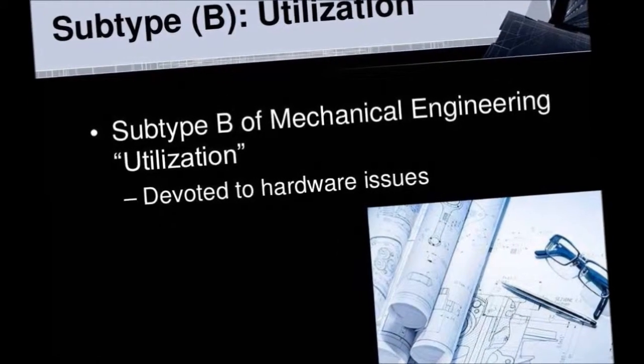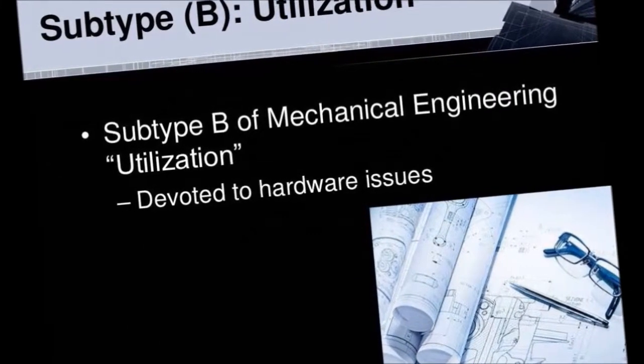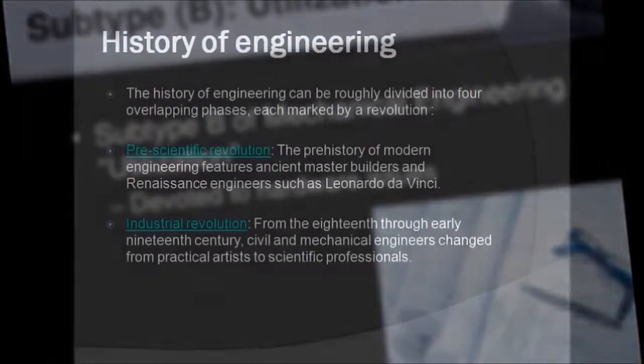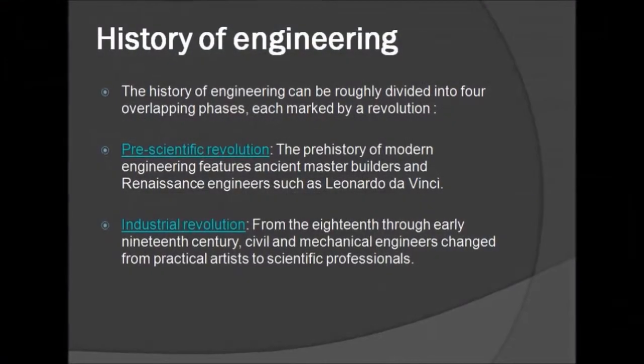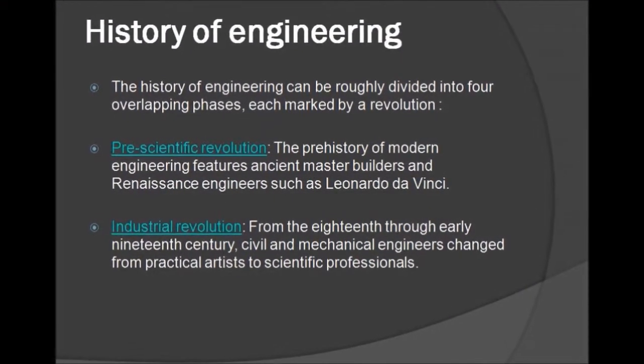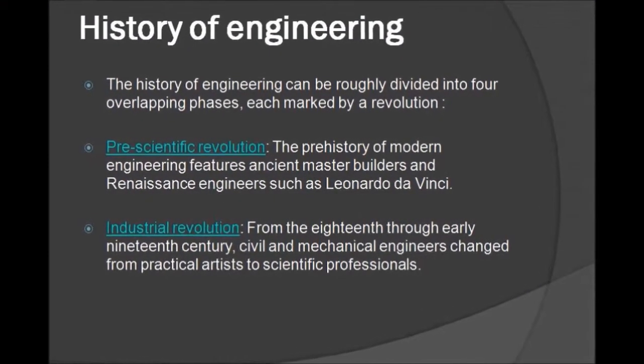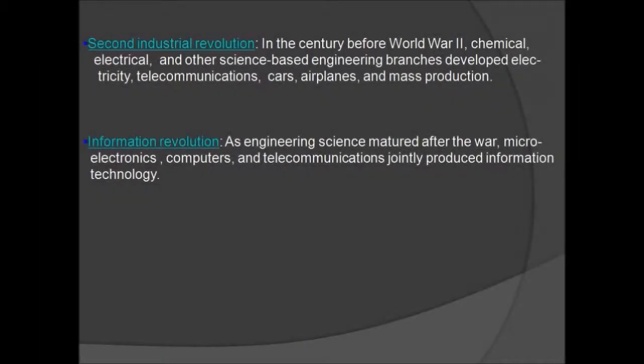The history of engineering is divided into four parts: pre-scientific revolution, industrial revolution, second industrial revolution, and information revolution.